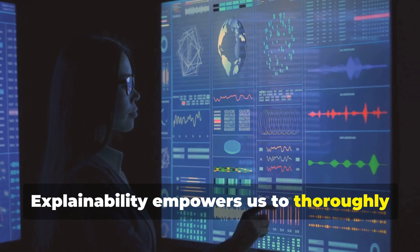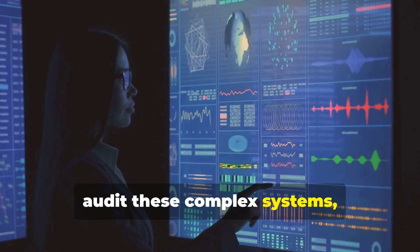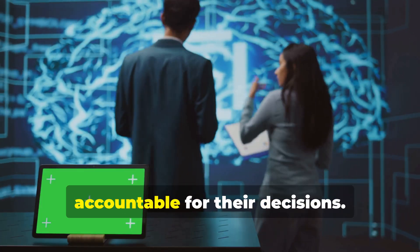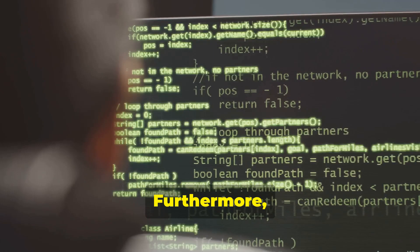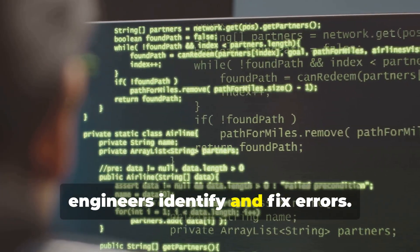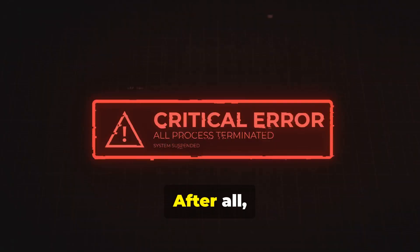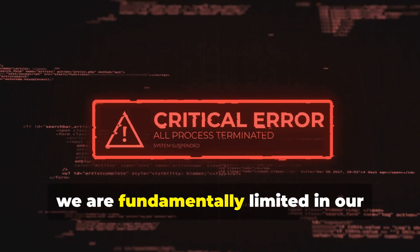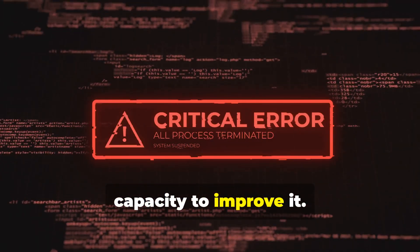Explainability empowers us to thoroughly audit these complex systems, rigorously ensuring they adhere to the highest ethical standards and are held accountable for their decisions. Furthermore, explainability is invaluable in helping engineers identify and fix errors. After all, if we lack the ability to understand why an AI system failed, we are fundamentally limited in our capacity to improve it.